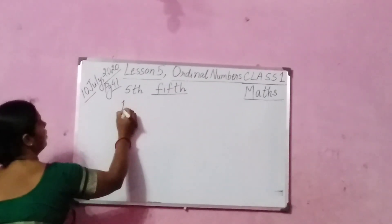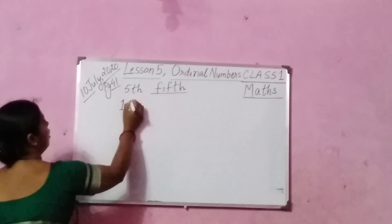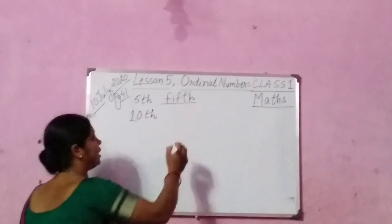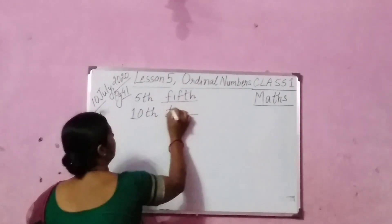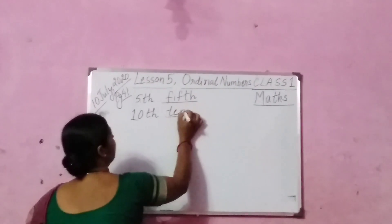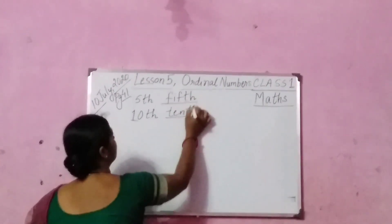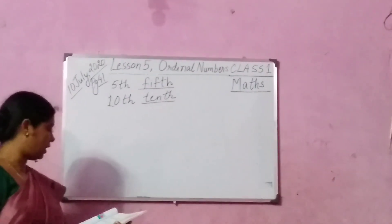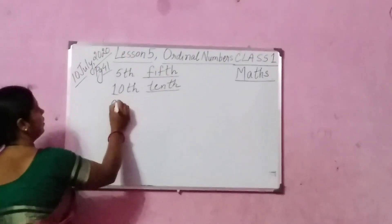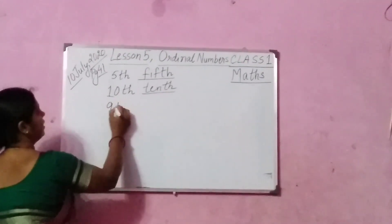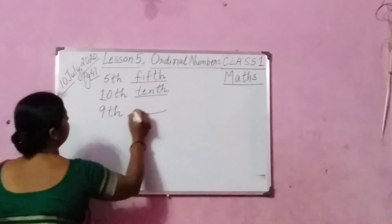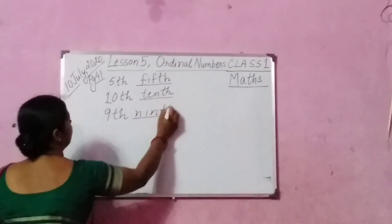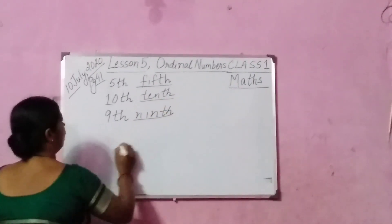Now you see 10. It is all mixed up, so please write the spelling. 10th: T-E-N-T-H. Next number is 9th. So what is the spelling? N-I-N-T-H. 9th.